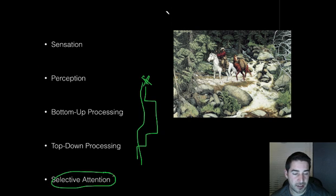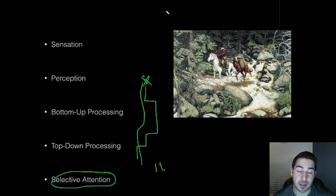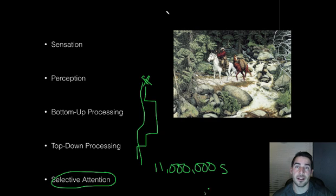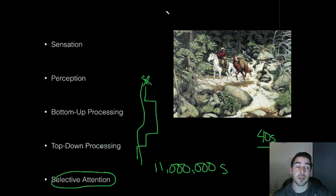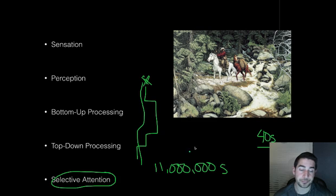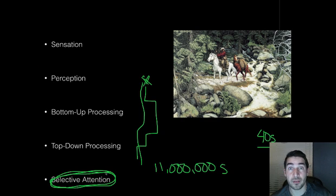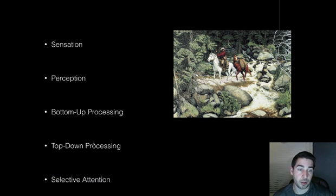Now we're talking about selective attention — what we're paying attention to. We take in an estimated 11 million pieces of information every second, but we generally pay attention to only about 40 of those things every second. So that's a lot of stuff not to pay attention to. Your brain and mind paying attention to different things comes down to how much you're going to focus on. Our attention is selective — we don't pay attention to everything, and your parents are very aware of this.